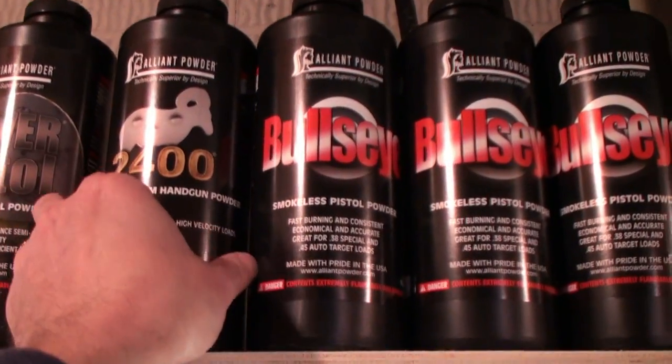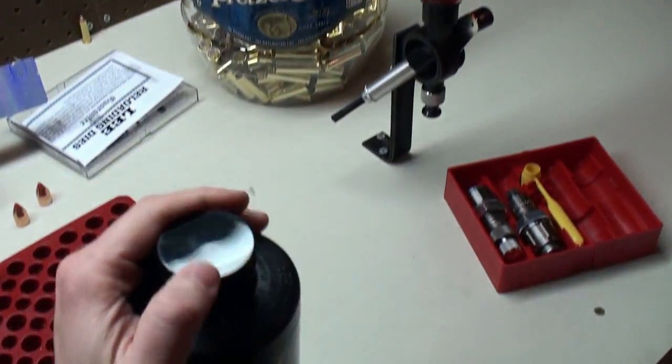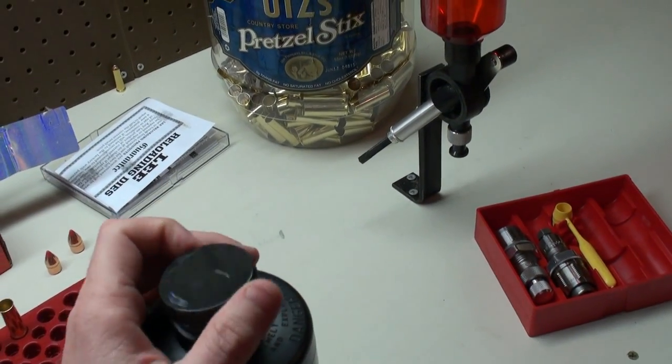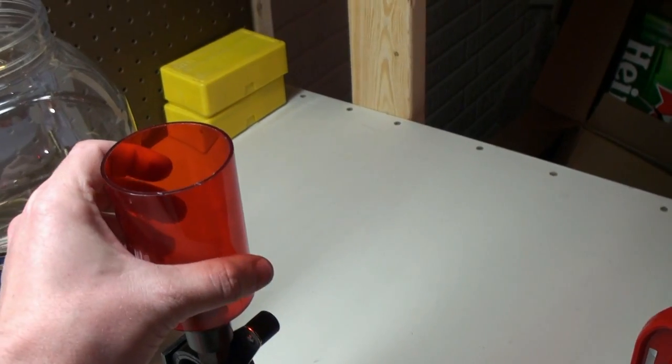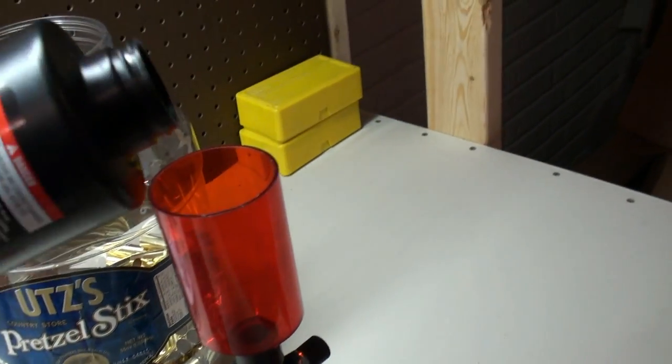What I'm going to do is get my 2400, unscrew the lid here, get my powder measure, and dump some in here.